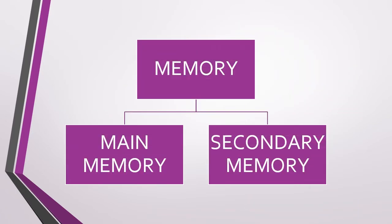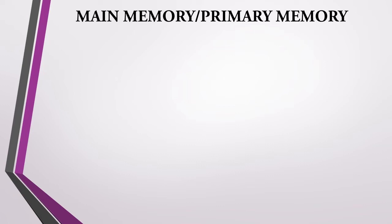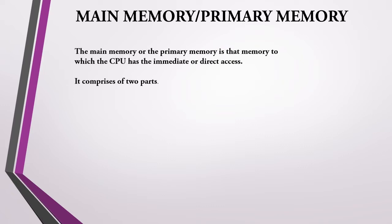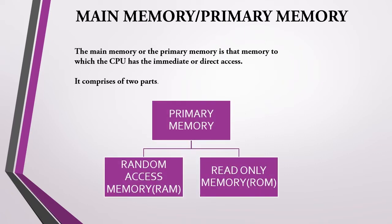Computer memory has two kinds of memory basically: primary memory and secondary memory. Let us learn one by one. First we learn about main memory. Main memory or primary memory is the memory to which the CPU has immediate or direct access. It comprises two parts: random access memory and read-only memory.